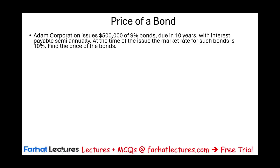In this example, Adam Corporation issues half a million of 9% bonds due in 10 years with interest payable semi-annually. Adam Corporation wants to borrow half a million dollars and is willing to pay 9% interest. They will pay the money back in 10 years, paying interest semi-annually, which means they have to make 20 payments — 10 years semi-annually, that's 10 times 2. At the time of the issue, the market rate for such a bond is 10%, and we need to find the price of the bond.